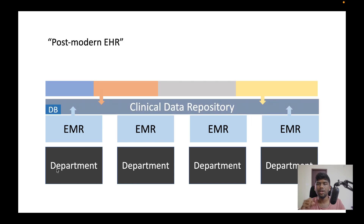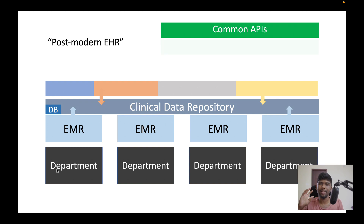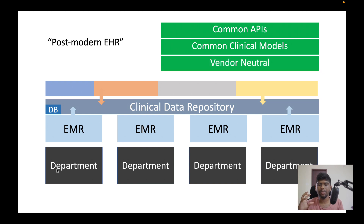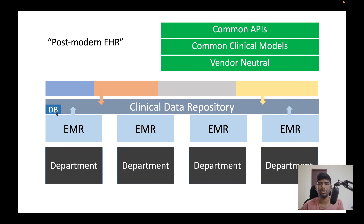This is where the post-modern EHR comes in. The underlying idea is that you have a common clinical data repository that all applications talk to, based on common public open APIs. They all share a similar clinical model — so the concept of blood pressure and pulse, for example, is represented in exactly the same way across applications. They are vendor-neutral, which is the most important point: you can switch the clinical data repository from one vendor to another without losing any data. You can also have multiple database technologies in the backend and it will still work the same, because it's based on common APIs and common clinical models. This is essentially why something like OpenEHR is needed.